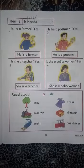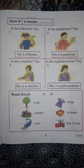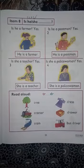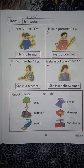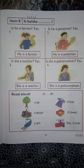Both 'is he' and 'is she' are used for a singular person. When we ask questions about someone, we use 'is he' or 'is she.' In Urdu, both mean 'kya ho' and they are used for a singular person.